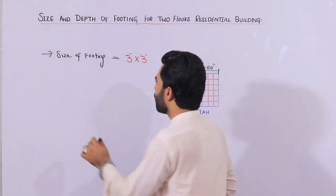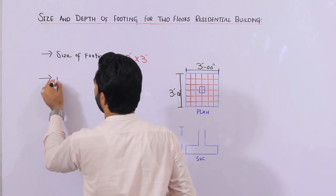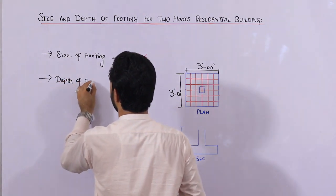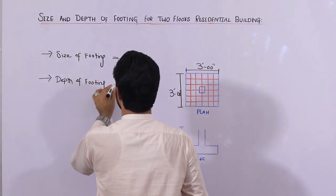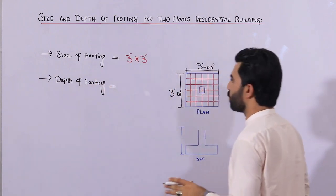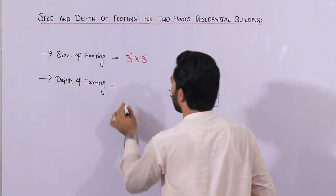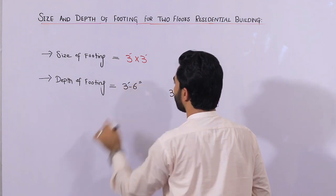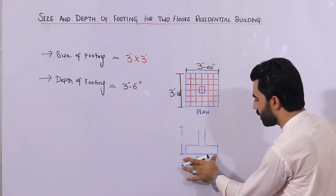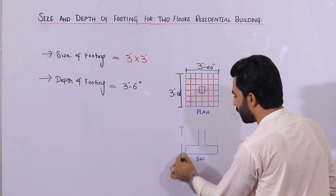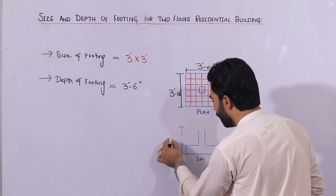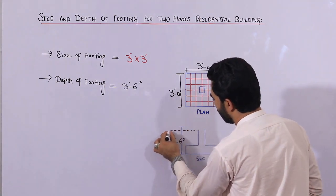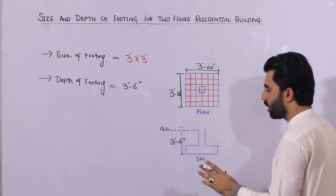The second one is the depth of footing. The depth of footing for G plus one story — if the size is three by three feet — the depth should be up to three feet and six inches. This is the depth of footing. As you can see in this section, the total depth of the footing should be three feet and six inches to the ground level GL.